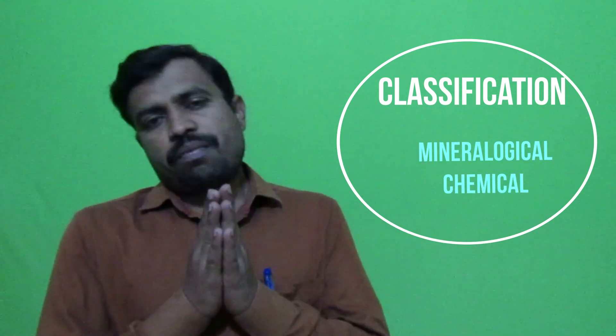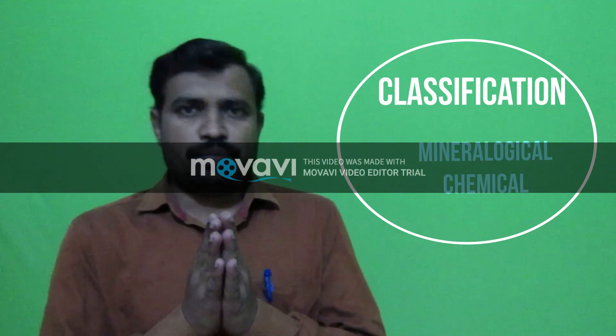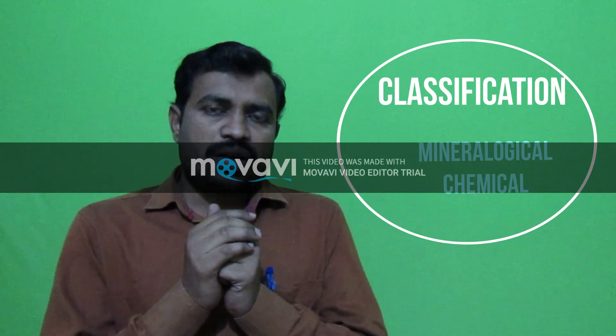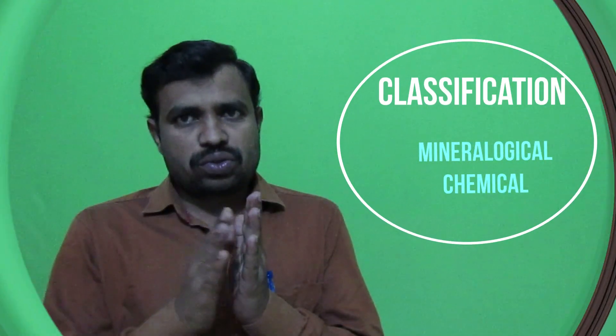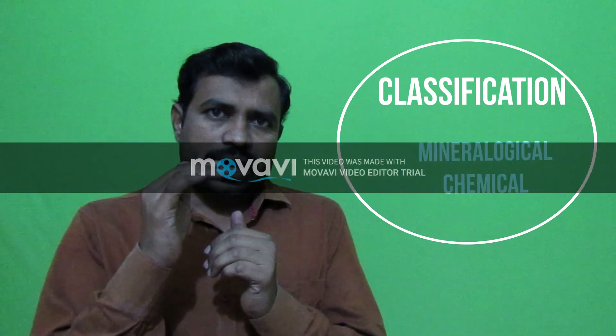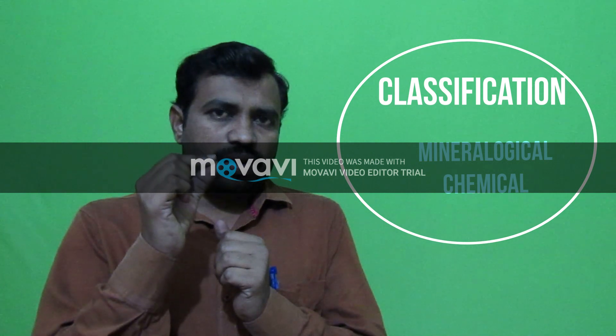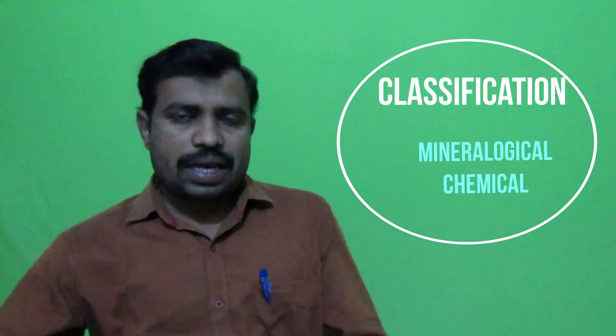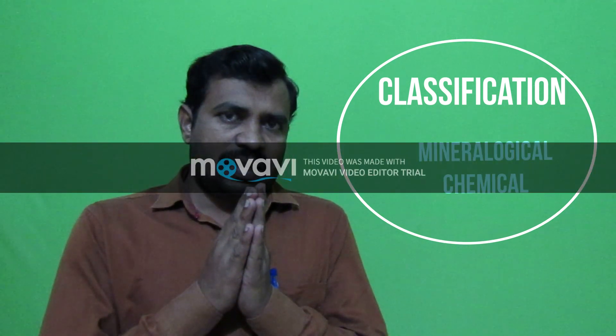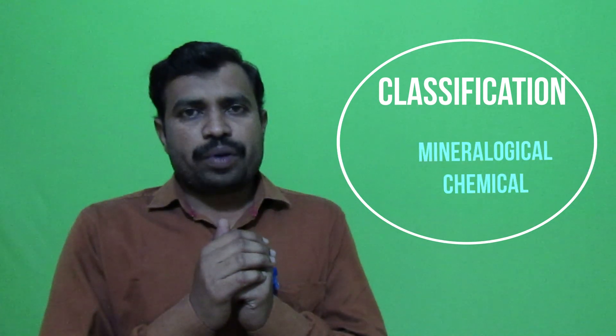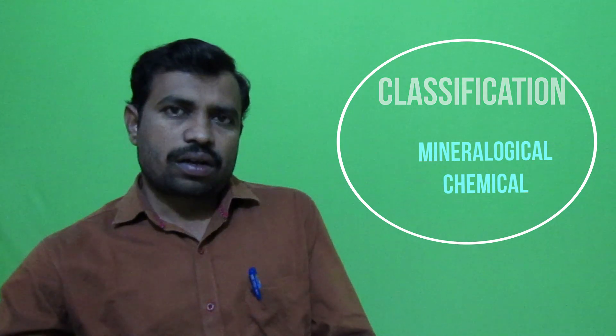The classification of carbonatites is based on mineralogy as well as chemical composition. On the basis of mineralogical classification, carbonatites are classified into two types: calcite-rich carbonatites, called sovite, and dolomite-rich carbonatites, called beforsite. Based on chemical composition, Na-rich carbonatites are called natrocarbonatite, and the other type is the Na-poor carbonatite, based on the presence of sodium.